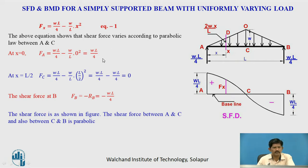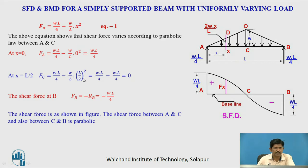We will find out the shear force by putting values of x. At x equals 0, shear force FA equals WL by 4 minus W by L into 0 square, which gives WL by 4. As it is positive, we draw it above the baseline. At x equals L by 2, shear force at C: Fc equals WL by 4 minus W by L into (L/2) square, so WL by 4 minus WL by 4 equals 0. Following the parabolic law this diagram connects these points. At B the shear force is minus RB, that is minus WL by 4, drawn below the baseline and connected by a parabolic curve.